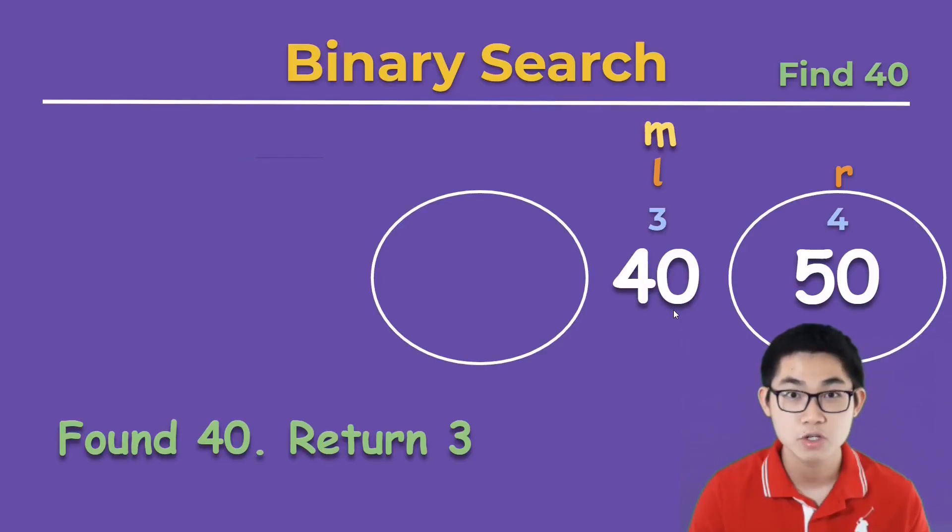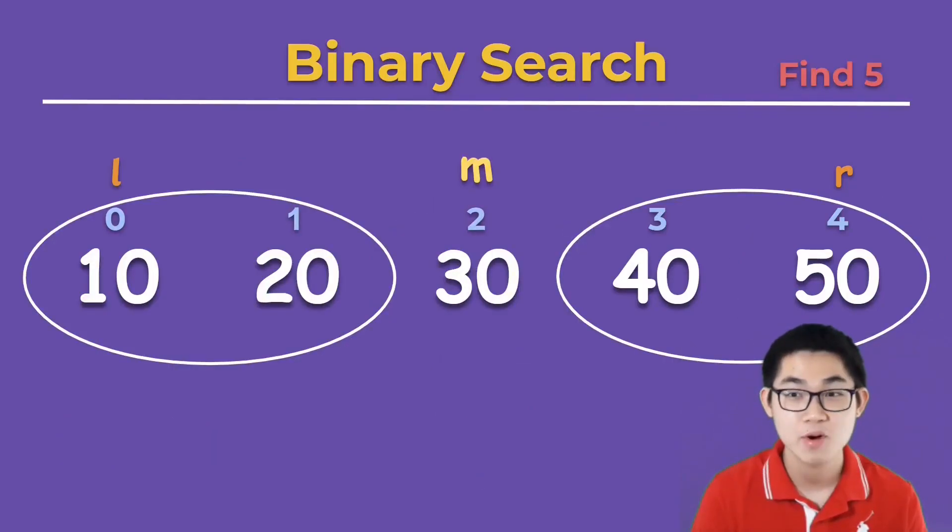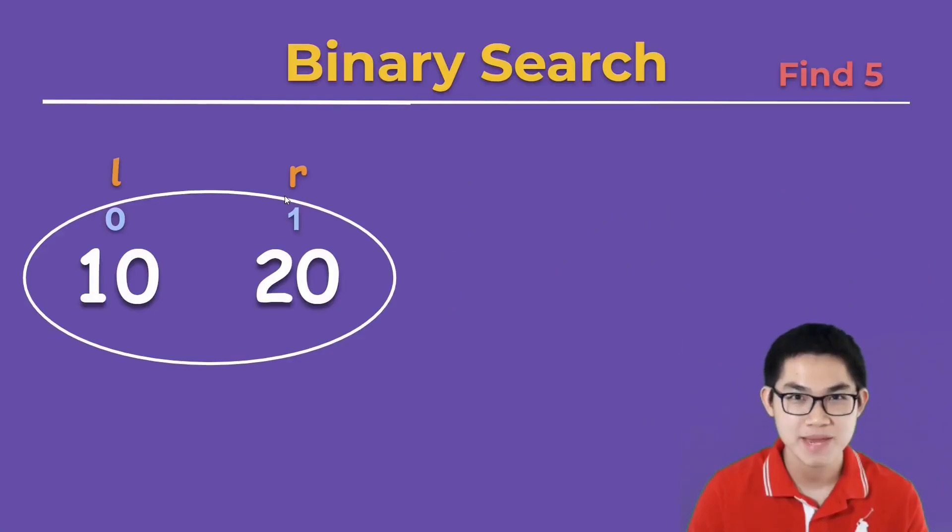You can return true or return the index 3. Let's do one more example and find number 5. We already have mid and we split the array into two groups. 5 is smaller than 30 so it has to be in the first group. We simply move R over to here, meaning we choose the first group, and we repeat the process. Mid is L which is 0, R is 1, we get 1 divided by 2 which is 0.5.